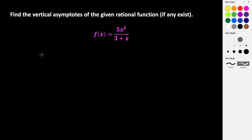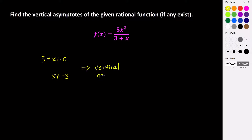So if we take this 3 plus x and figure out what value makes this 0, we subtract x and get that x cannot equal negative 3. This tells us that we have a vertical asymptote at x equals negative 3. The equation of our vertical asymptote is a vertical line with the equation x equals negative 3. Whatever makes our denominator undefined is where we get vertical asymptotes.